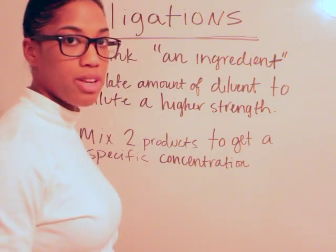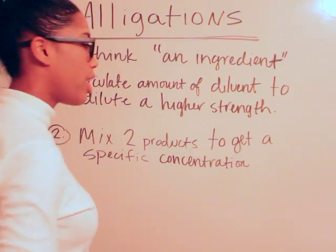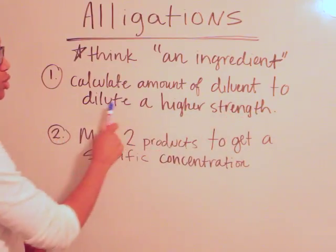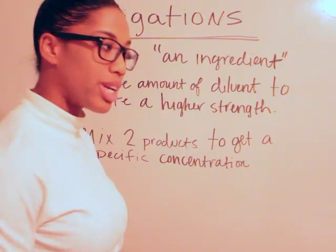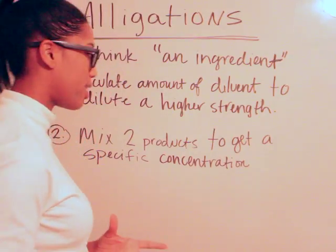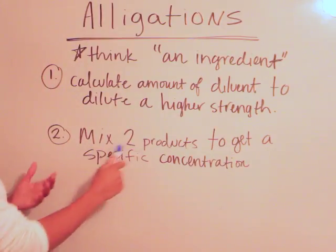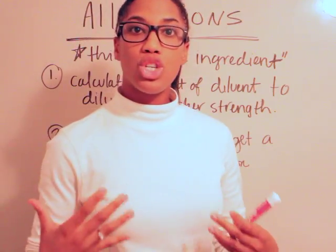There are two reasons that we use alligations. One reason would be to calculate an amount of diluent to dilute a higher strength. And the second reason we would use an alligation would be to mix two products to get a specific concentration.